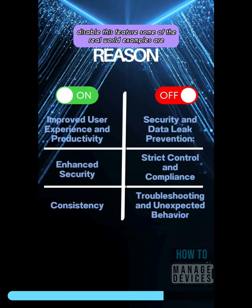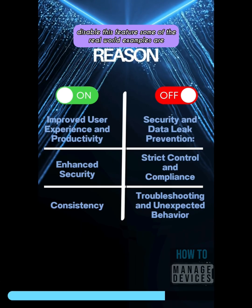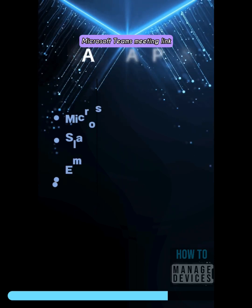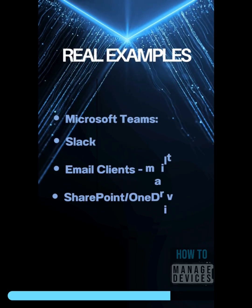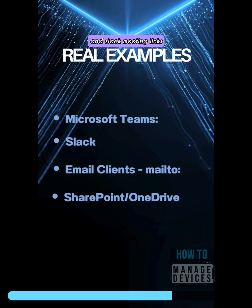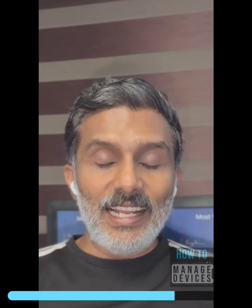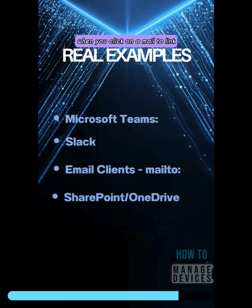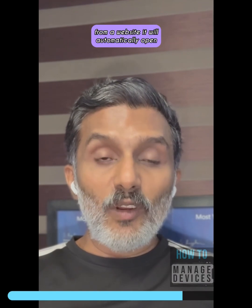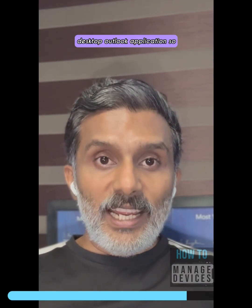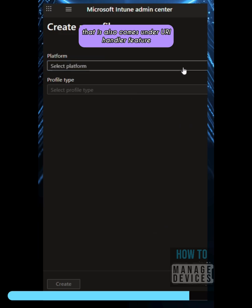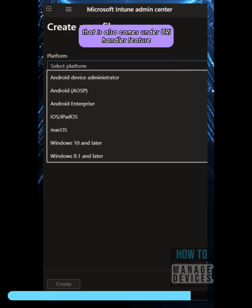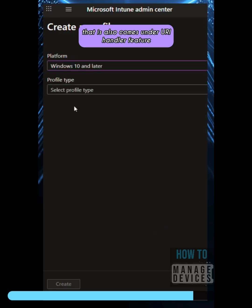Some real-world examples are Microsoft Teams meeting links, Slack meeting links, and mailto options. When you click on a mailto link from a website, it automatically opens the desktop Outlook application — that also falls under the URI Handler feature.